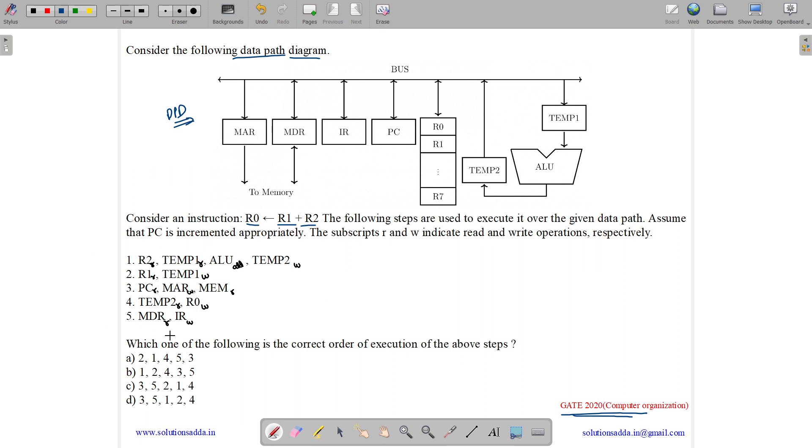So here we have the instructions. Which of the following is the correct order of execution of above steps? The steps are: R2 read, temp1 read, ALU add, temp2 write. R1 read, temp1 write. Program counter read, memory address register write. Memory write, memory read. Temp2 read, R0 write. MDR, memory data register read and instruction register write.